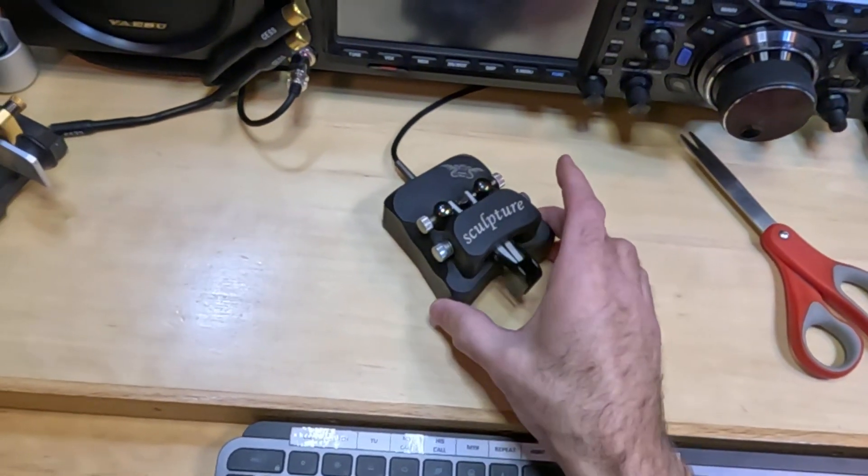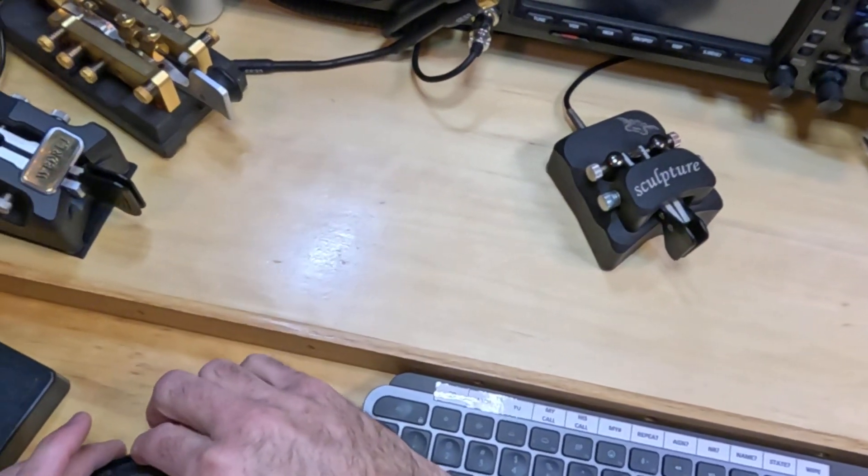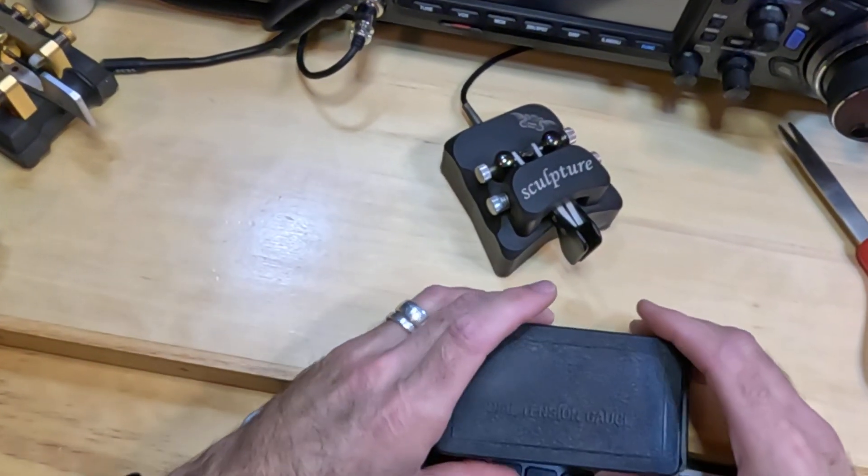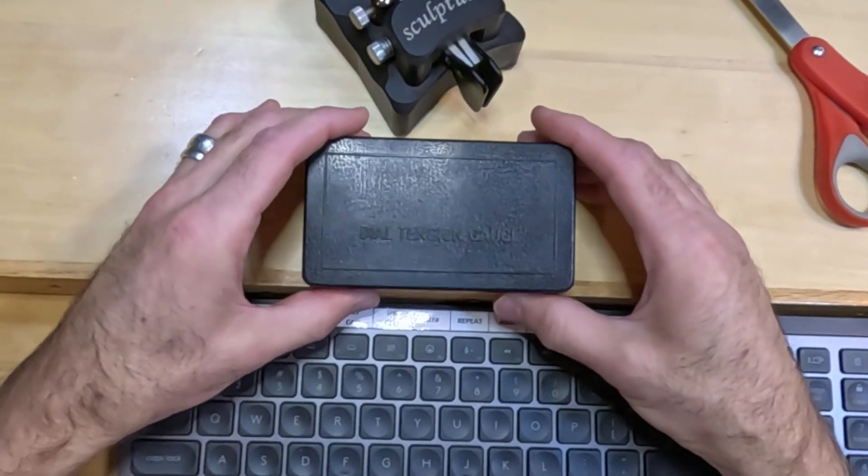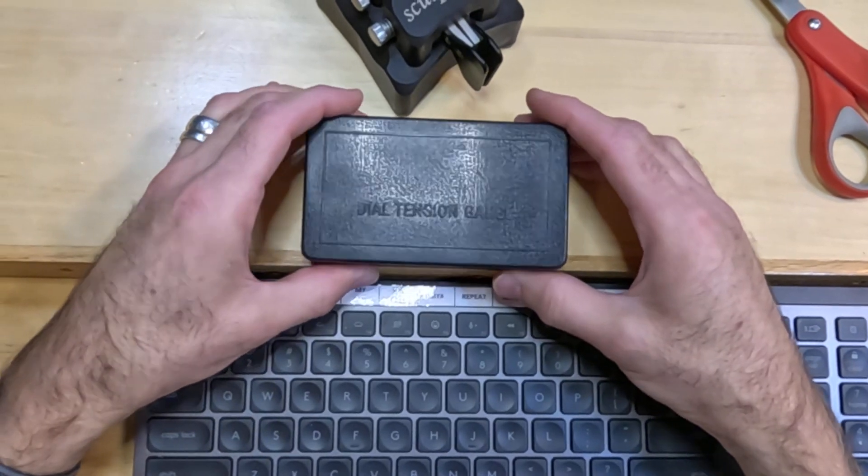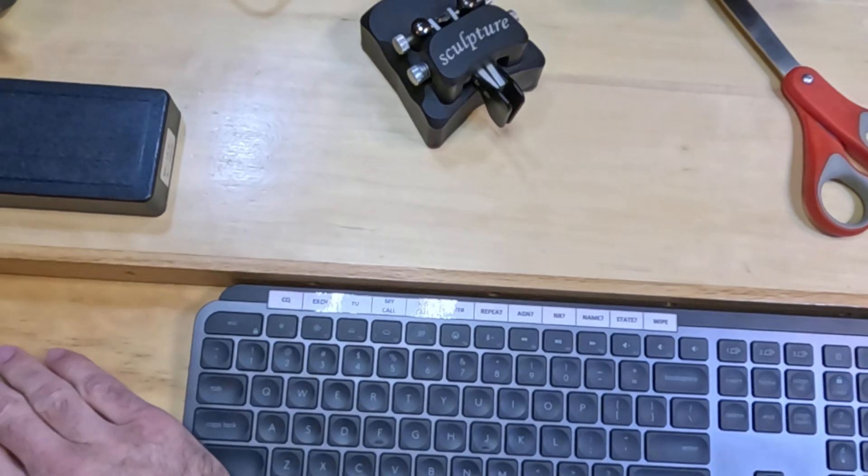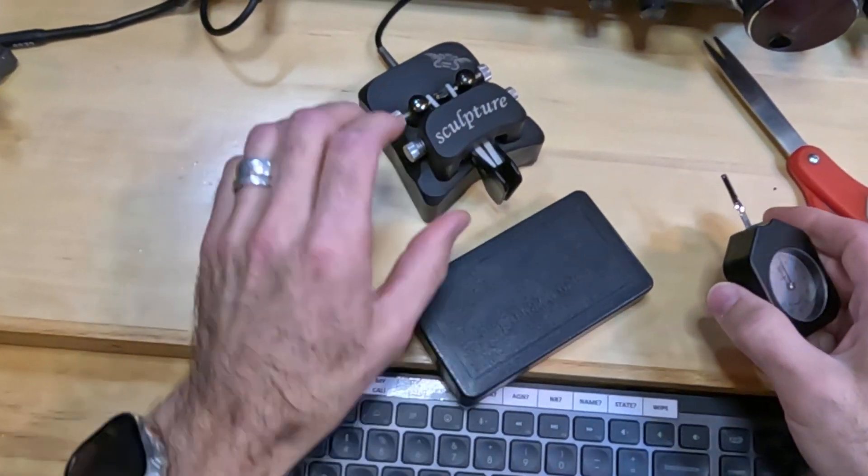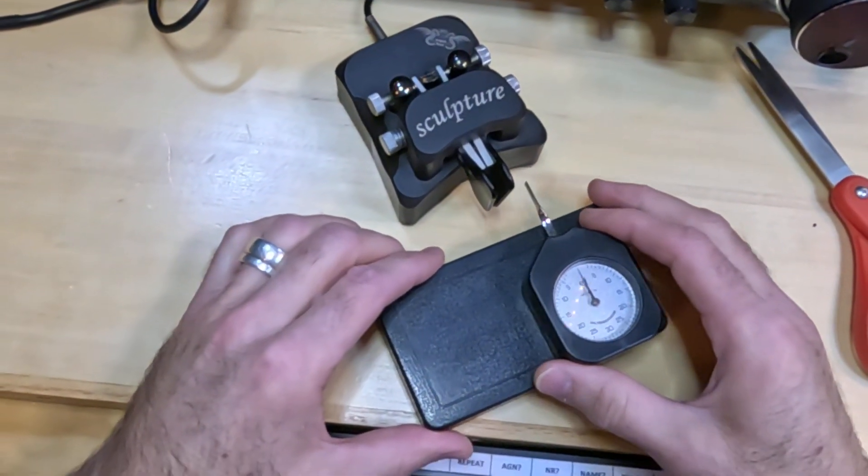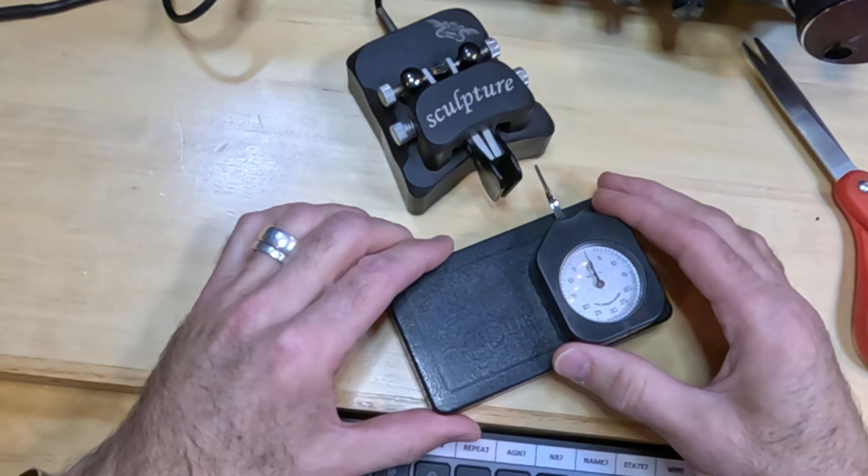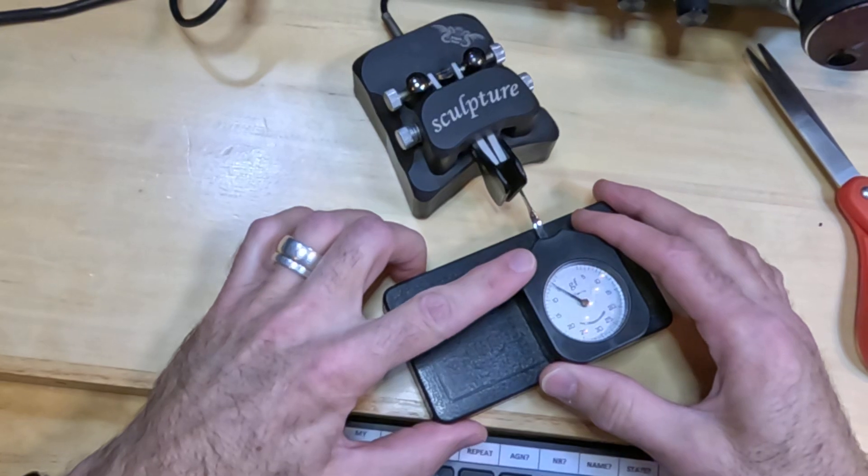Then the next thing I do is I adjust the tension using a dial tension gauge. This is one I got off of Amazon and it's good enough quality. I think it's very consistent across its readings and I guess the consistency is the importance maybe not the accuracy. But I found that my ideal setting is 25 grams.